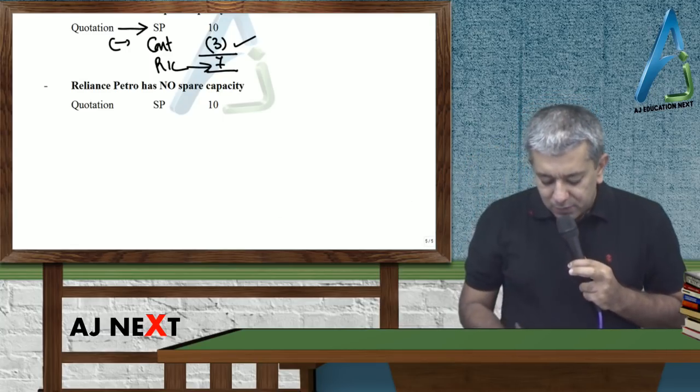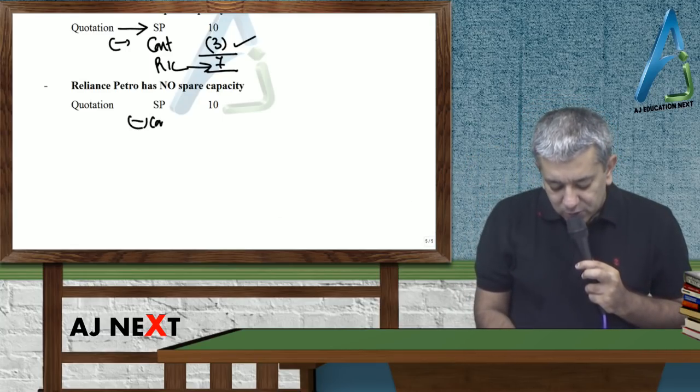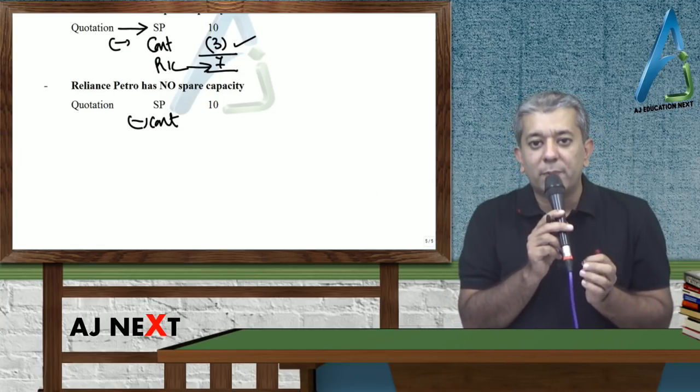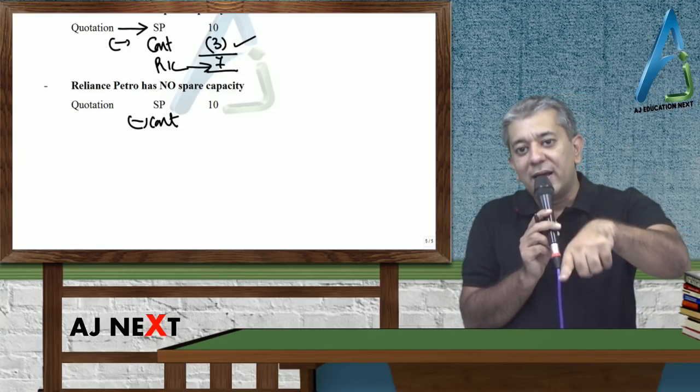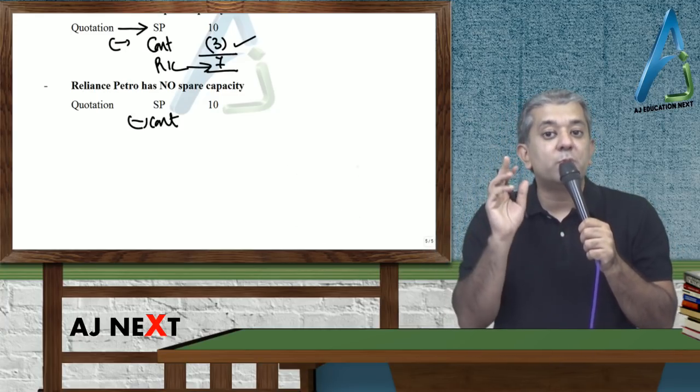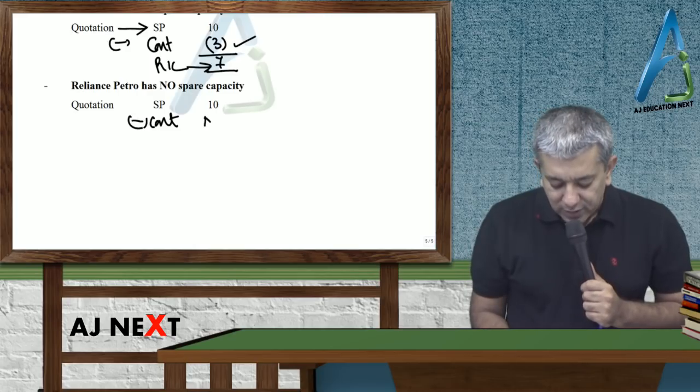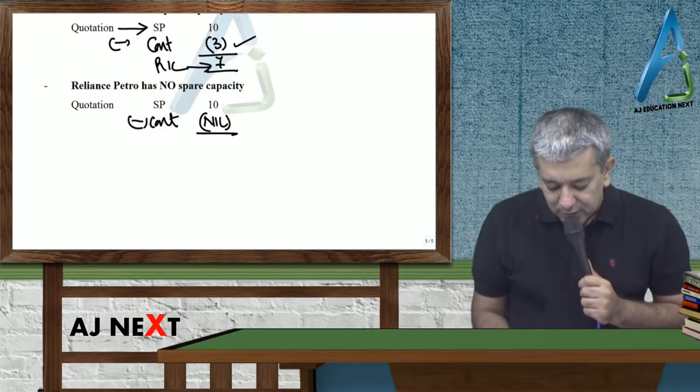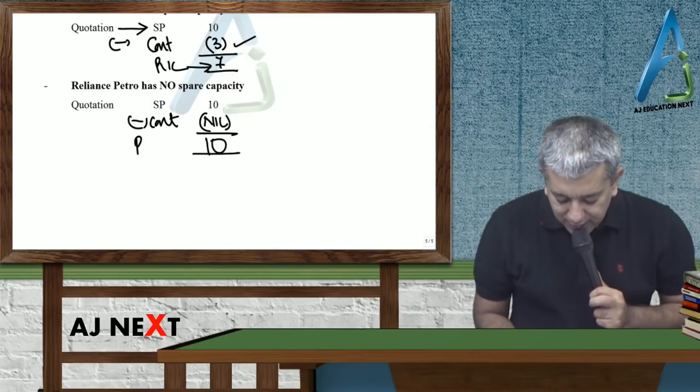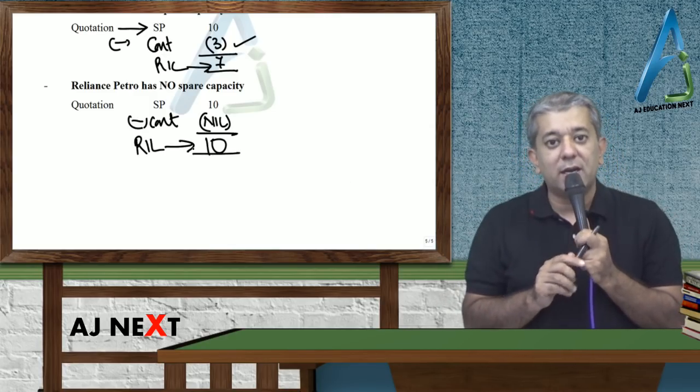Ab zara souchou, agar aisa hooga toh, common sense hai, Reliance petro ne kuch paisa toh kama hai nahi. Kyonki agar reliance, matlab RIL se kama liya, toh usne market se lose bhi toh kar diya. So therefore, yahaan pe contribution to be earned, kitna rahe ga? Zero. Toh ultimately, aise cases ke inder, RIL ka joh final cost hai, woh kitne rupiz ka rahe ga? Ten.